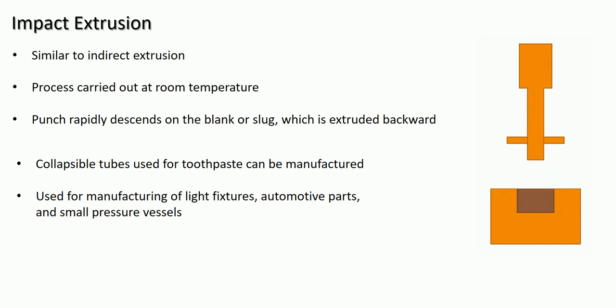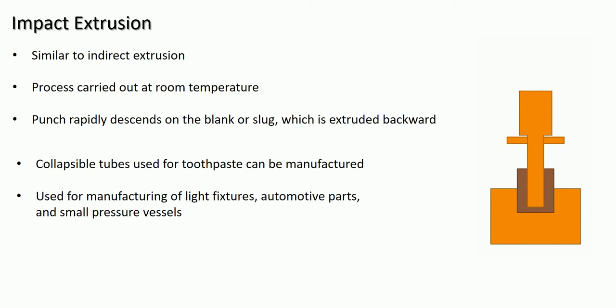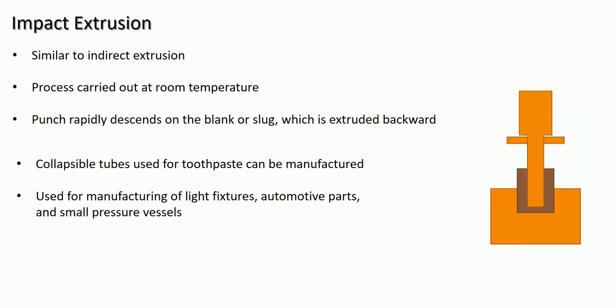With the help of the punch, an impact force is applied on the slug. Because of this impact load, the slug is extruded in the backward direction — in the direction opposite to the movement of the punch.